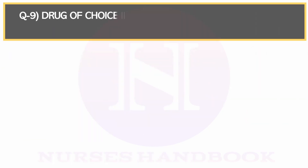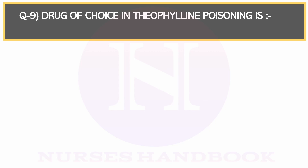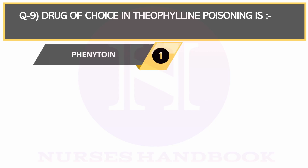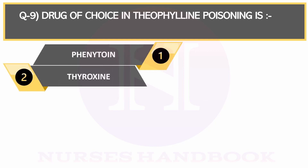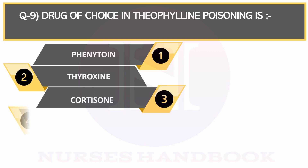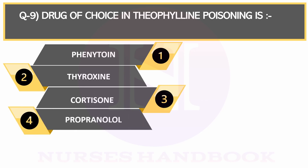Question number 9. Drug of choice in theophylline poisoning is Option 1: Phenytoin, Option 2: Thyroxine, Option 3: Cortisone, and Option 4: Propranolol.